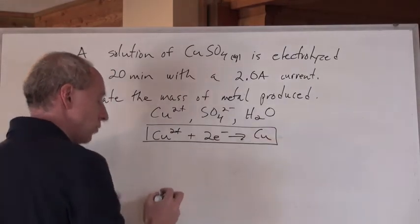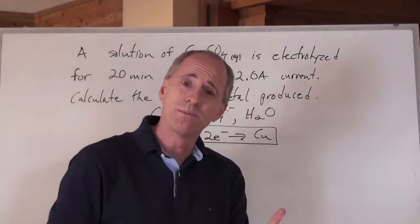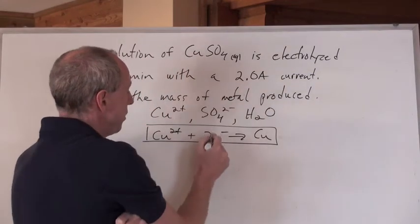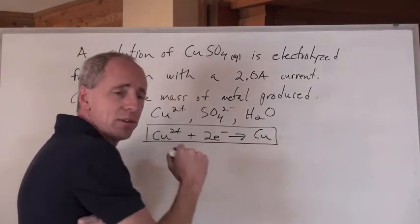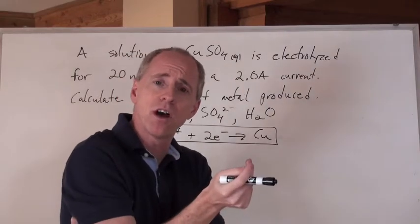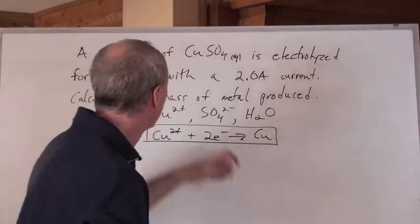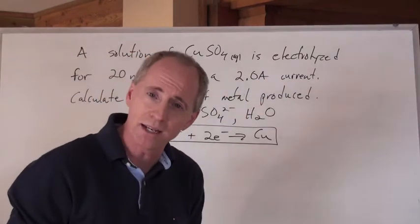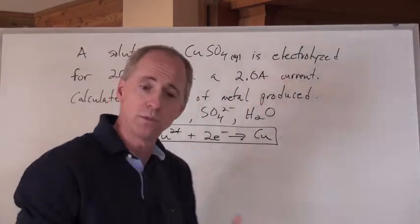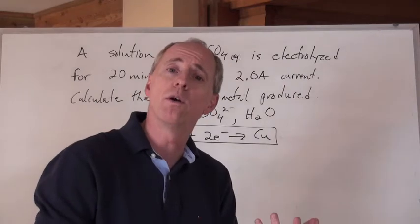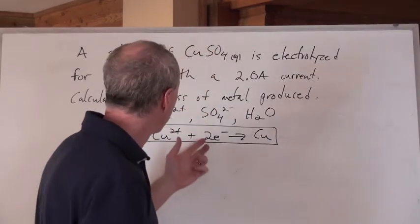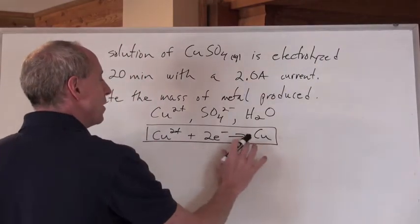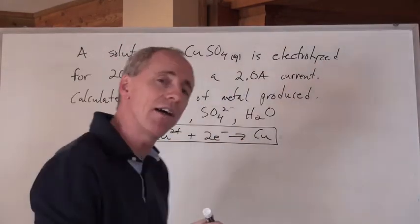We want to know the mass of that produced. But what we really need to know is, is there information here that can give us the moles of electrons to find the moles of copper and then the mass of copper? You betcha. It's all locked up in the time here and the current here, which is in coulombs per second. And by the way, coulombs is the unit of charge for the electron. So what we're going to do is utilize a formula to do this calculation with this half reaction.